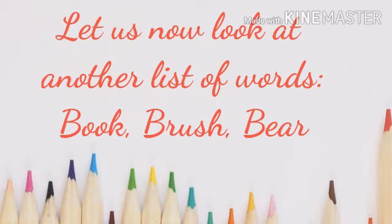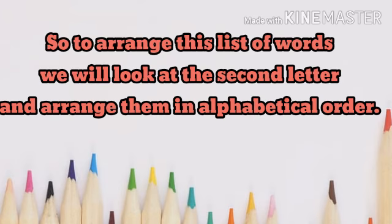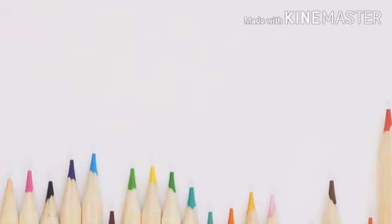Now, how do we arrange them in alphabetical order? When two or more words begin with the same letter, we look at the second letter. To arrange this list of words, we will look at the second letter and arrange them in alphabetical order.